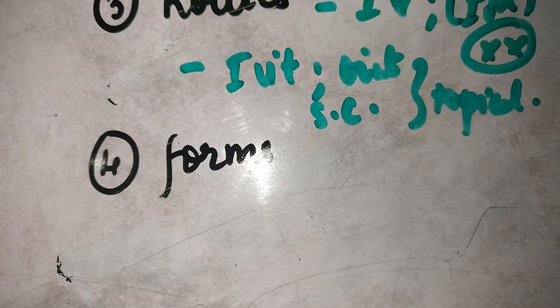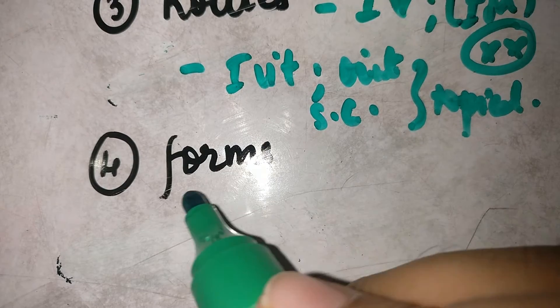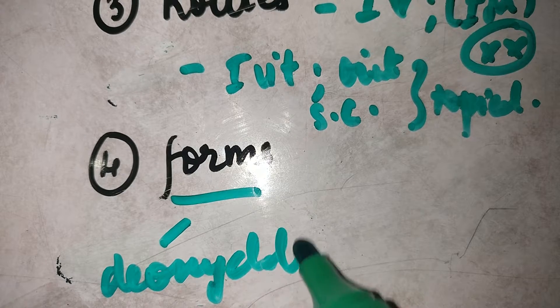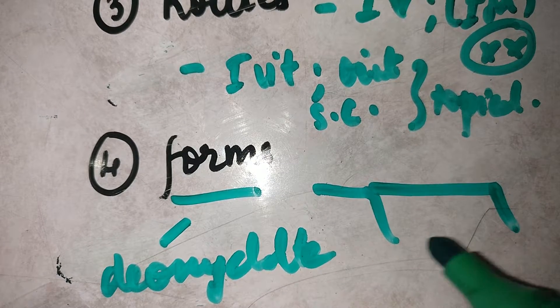Number four is the form. So Amphotericin B has some specific forms. These include deoxycholate form which is the one used regularly and two other forms.